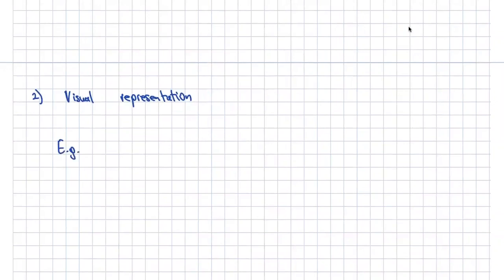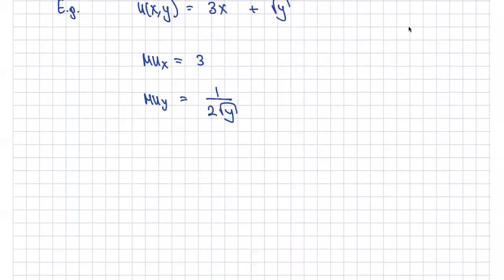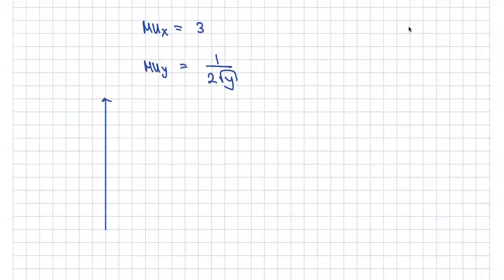Let's say the quasi-linear utility function is 3x + √y. The marginal utility of x is just 3. The marginal utility of y is (1/2)y^(−1/2), which is just the partial derivative of √y. If you have trouble with that, you might want to refresh your memory on derivatives.